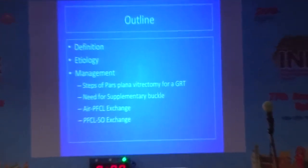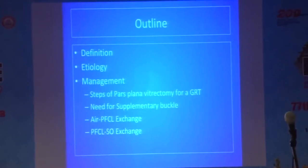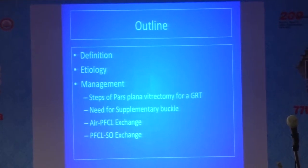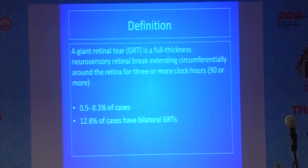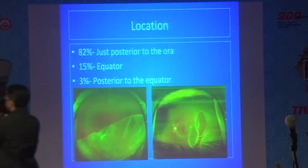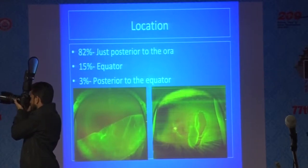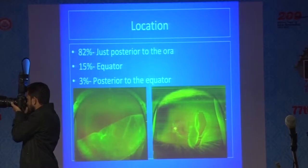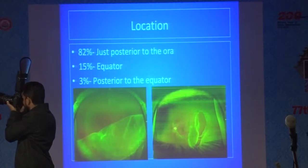This is the outline of my presentation. I'll start with the definition. A giant retinal tear is a full-thickness neurosensory retinal break that extends circumferentially around the retina for three or more clock hours — that is, 90 degrees or more. They are not very common, accounting for 0.5 to 8.3 percent of all rhegmatogenous retinal detachments, and around 12.8 percent of cases are bilateral. The most common location is just posterior to the ora serrata in 82 percent of cases, equatorial in another 15 percent, and posterior to the equator in around 3 percent.